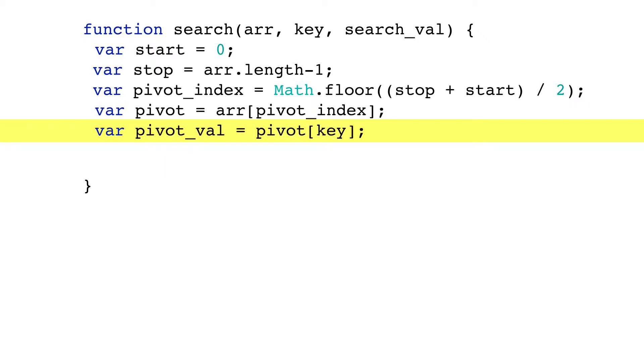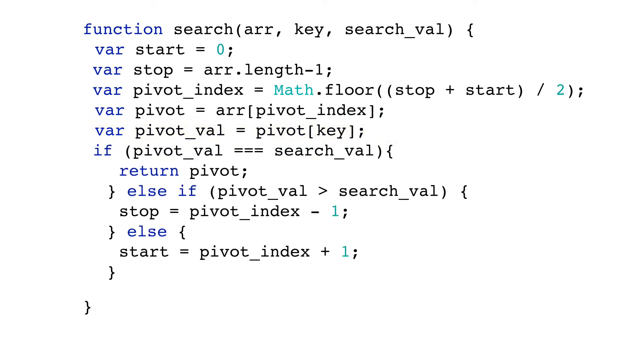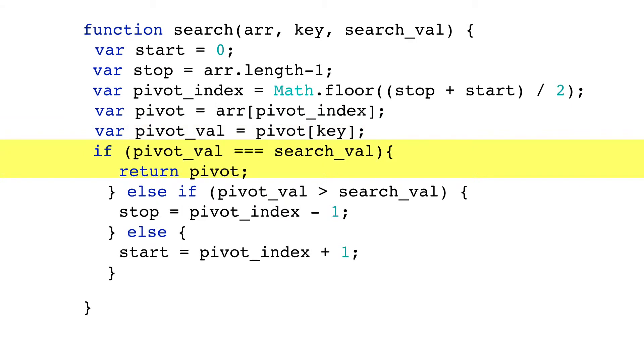Now let's do something with these variables. Basically, we'll check for a match, and if there is none, we'll change stop and start indices and repeat the process. Here's the check. If there's no match returned, see if the pivot's value is bigger than the search value.